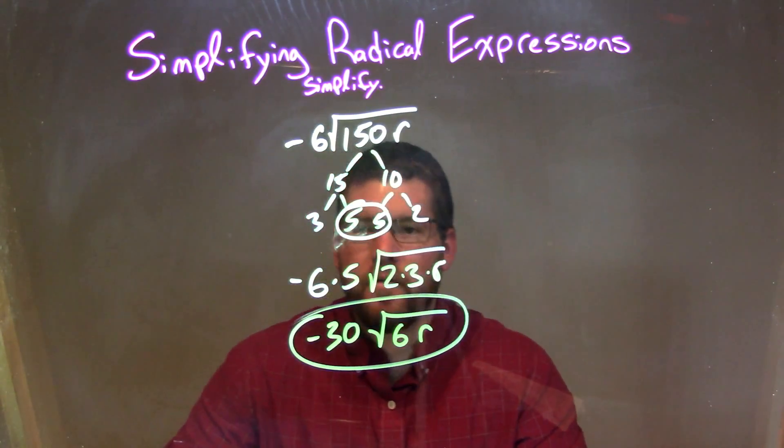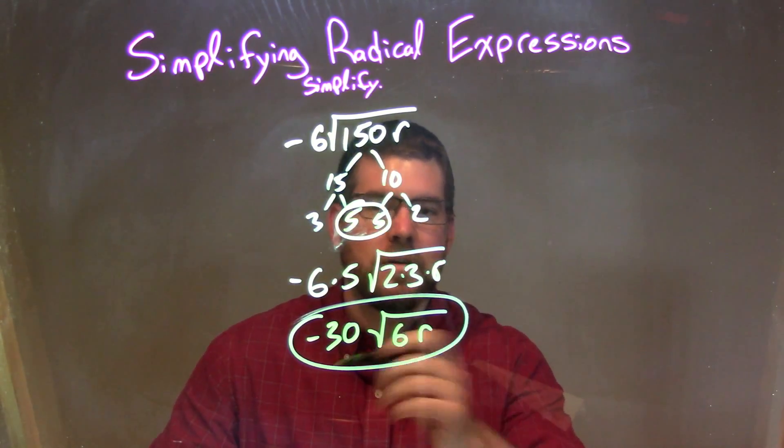And that's it. Pretty simple. My final answer would be negative 30 square root of 6R.